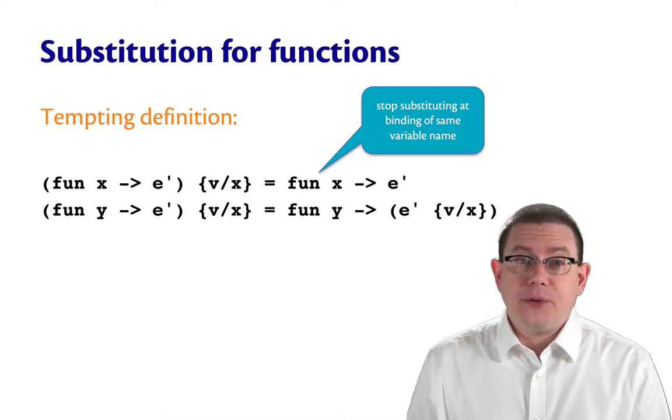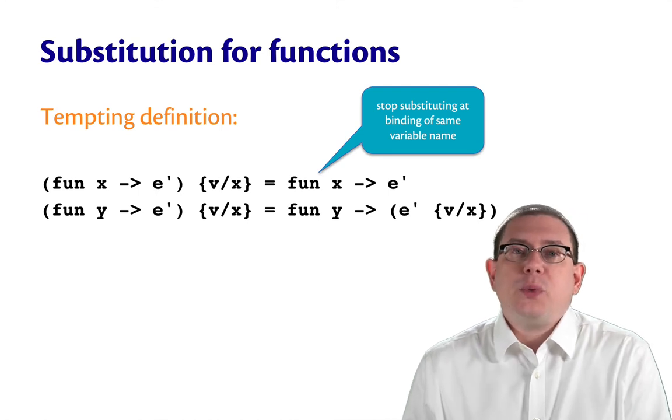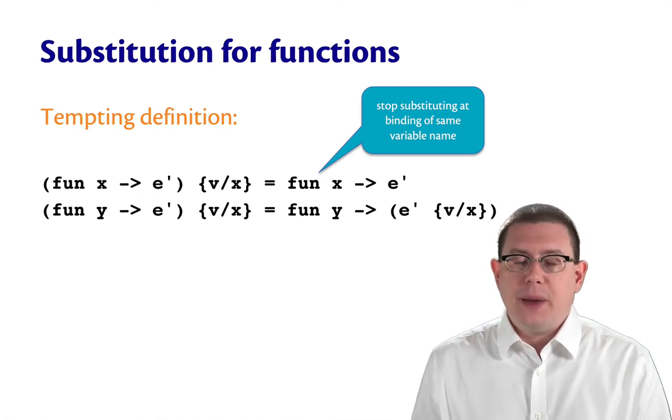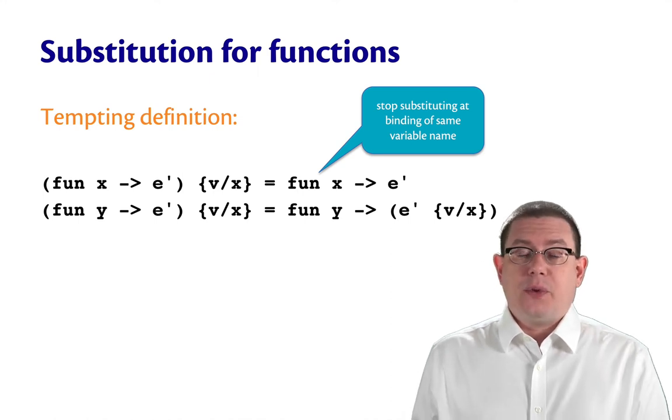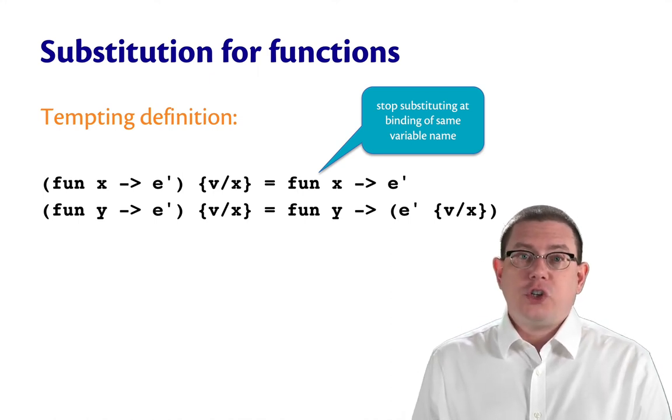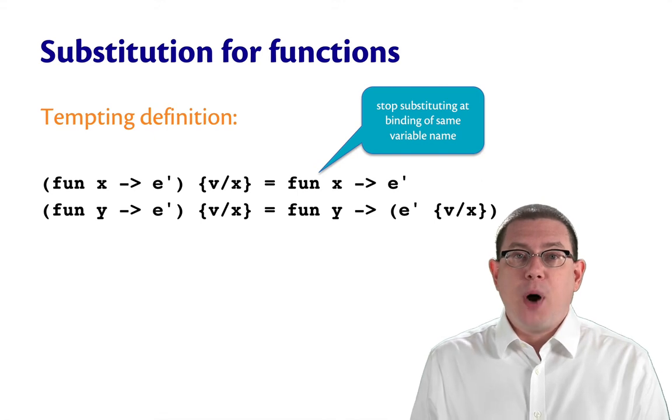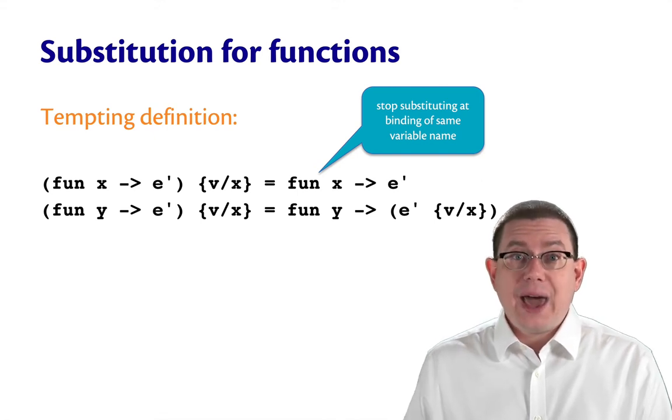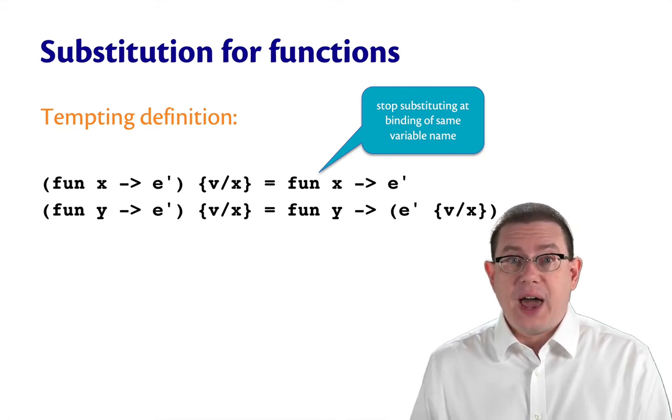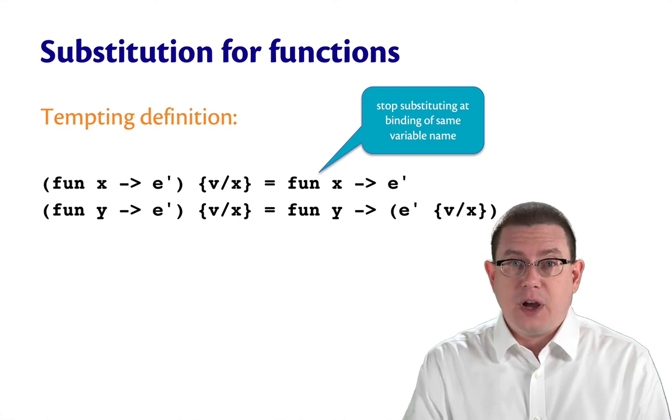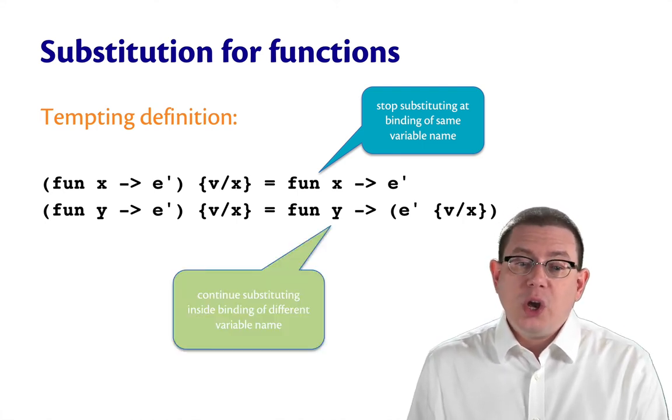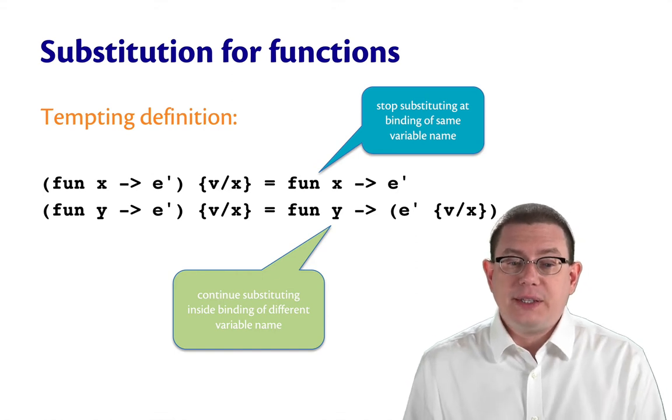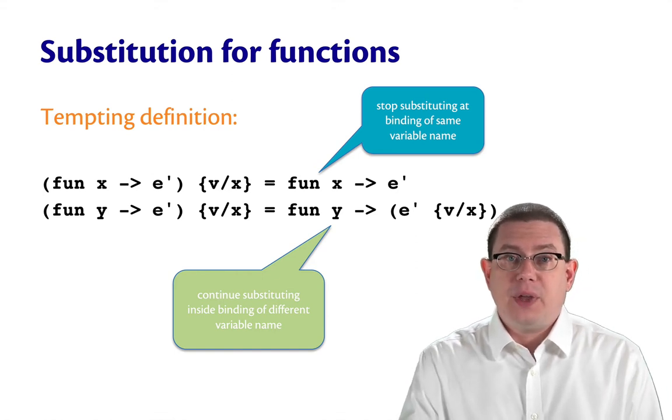What about if we get a different variable name? So suppose we have fun y arrow e prime and we're substituting v for x. Well, x and y are not the same variable here. So it stands to reason we should recurse inside of the body of that function and go ahead and do the substitution of v for x inside of e prime. This corresponds to what we looked at in a previous definition of substitution, where we would continue substituting inside a binding of a different variable name.